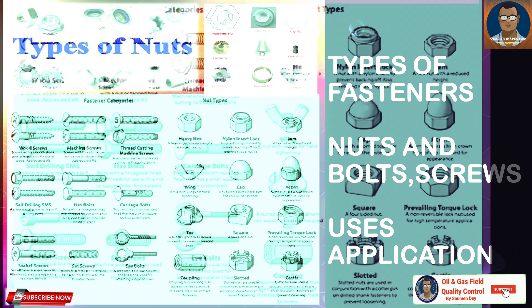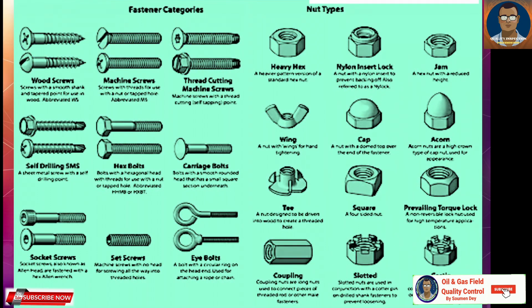What are fasteners? A fastener is a hardware device that mechanically joins two or more objects. In general, fasteners are used to create non-permanent joints which can be removed or dismantled. Some examples of fasteners are bolts, clips, latch, pins, sockets, nuts, washers, nails, and screws.